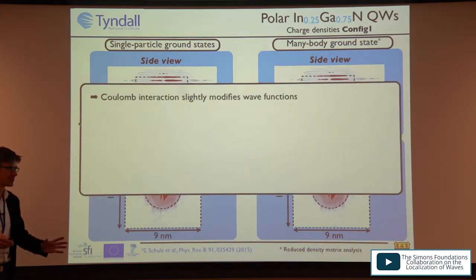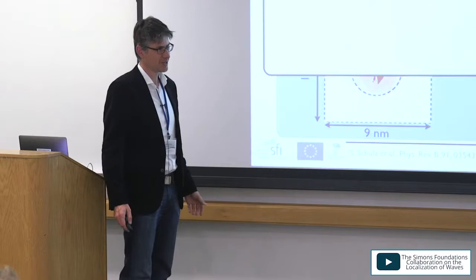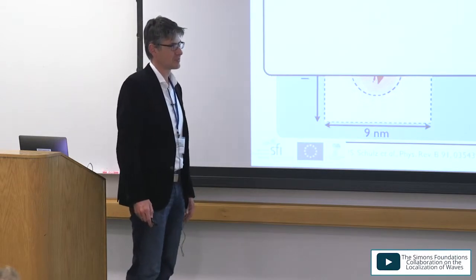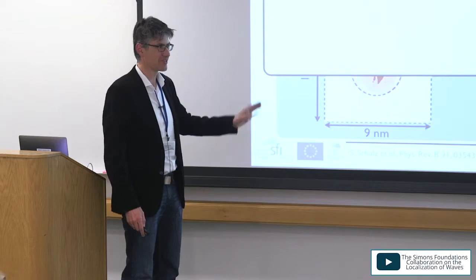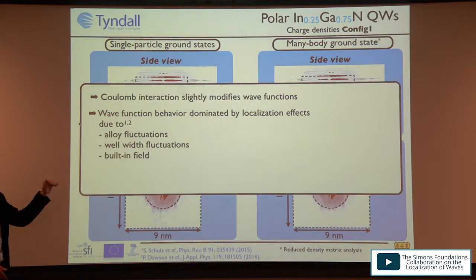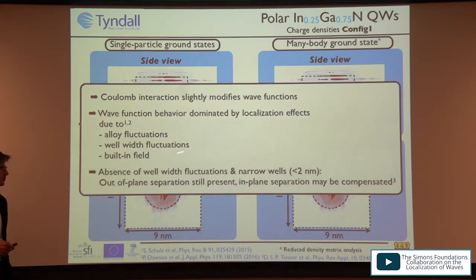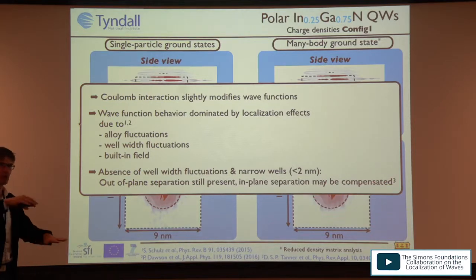This answers to some degree whether we have a true exciton: there is no relative motion change, all dominated by the interface situation. Three factors contribute: the built-in field, well-width fluctuations, and random alloy fluctuations. We have done this for different indium contents with and without well-width fluctuations. The Coulomb effect slightly modifies the wave function — in narrow wells or smaller systems there can be some in-plane redistribution of the wave functions.